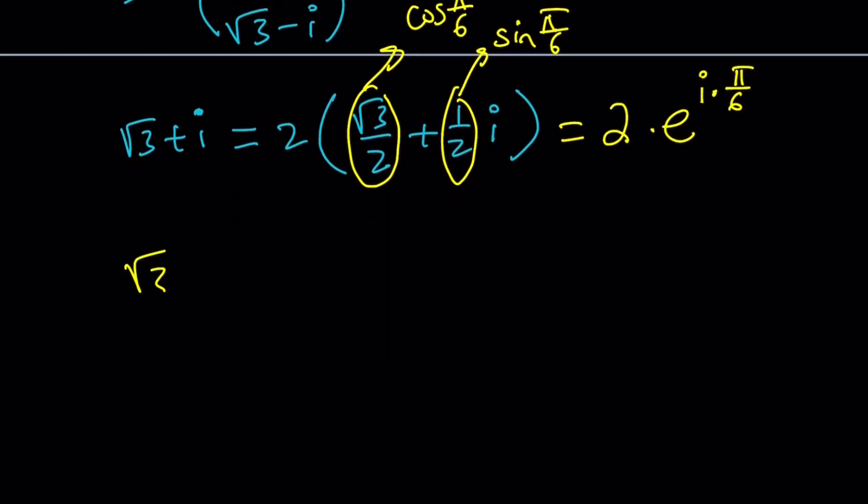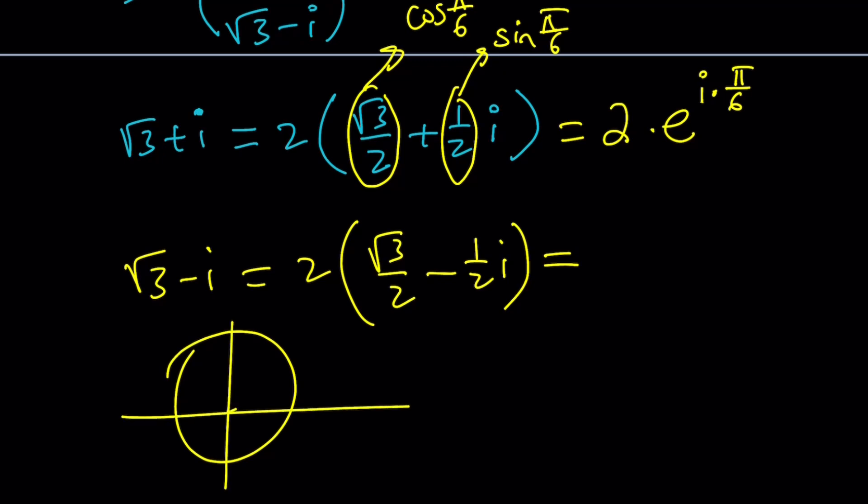How do you do the same thing with this? Very similar. But this time the angle is going to be different. Now if you consider the unit circle, this is where the 30 degree is. And you just have to reflect it because the x stays the same, but the y value or the imaginary part is negated. So it's going to be 2 pi minus pi over 6, which is 11 pi over 6, right? It's going to be 2 times e to the power i times 11 pi over 6. Awesome.